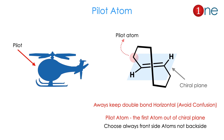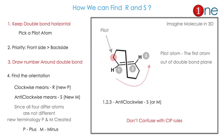Before getting into R and S configuration, you need to know the pilot atom. Think of a helicopter — the pilot is at the top of the machine, driving the craft. Similarly, you have to identify the pilot atom in cycloalkene. The pilot atom is the atom above the alkene plane, and importantly, you must always choose the front side one. Keep the double bond horizontal at all times.